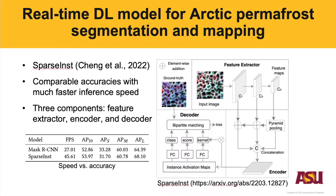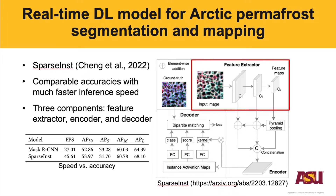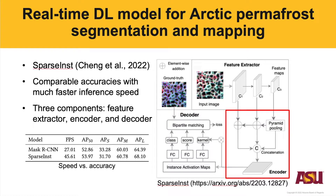In this work, we demonstrate the use of a real-time deep learning model for Arctic permafrost feature mapping. The model we demonstrate is called Sparse Inst, proposed in 2022. As the table shows, it can achieve comparable accuracy with much faster inference speed. The model architecture contains three components: first, the feature extractor, which extracts features from the image; second, the encoder, which encodes different feature maps with different scale information into one single feature map; and third, the decoder, which generates class scores and masks from the input feature for each instance.